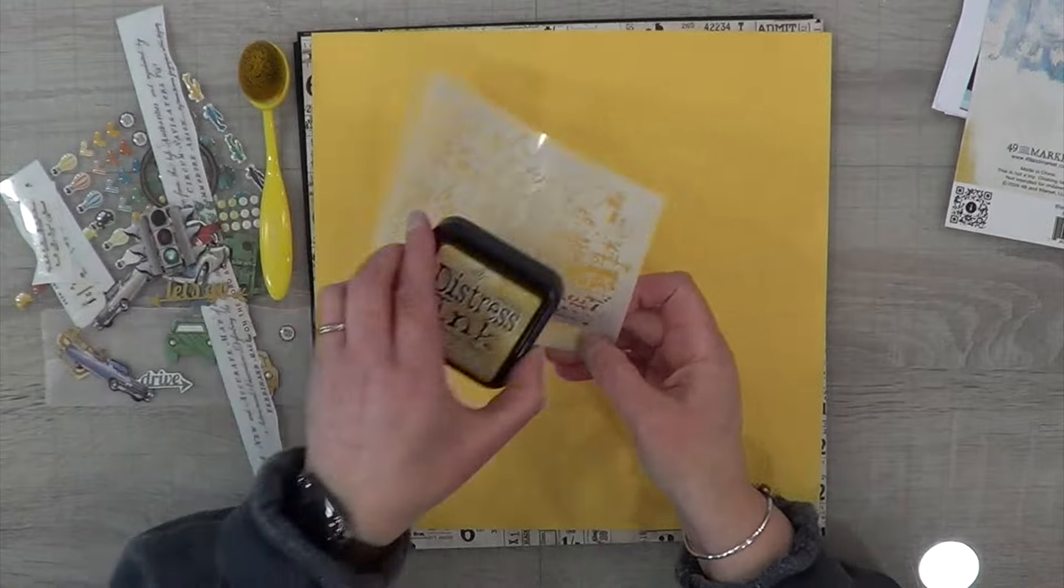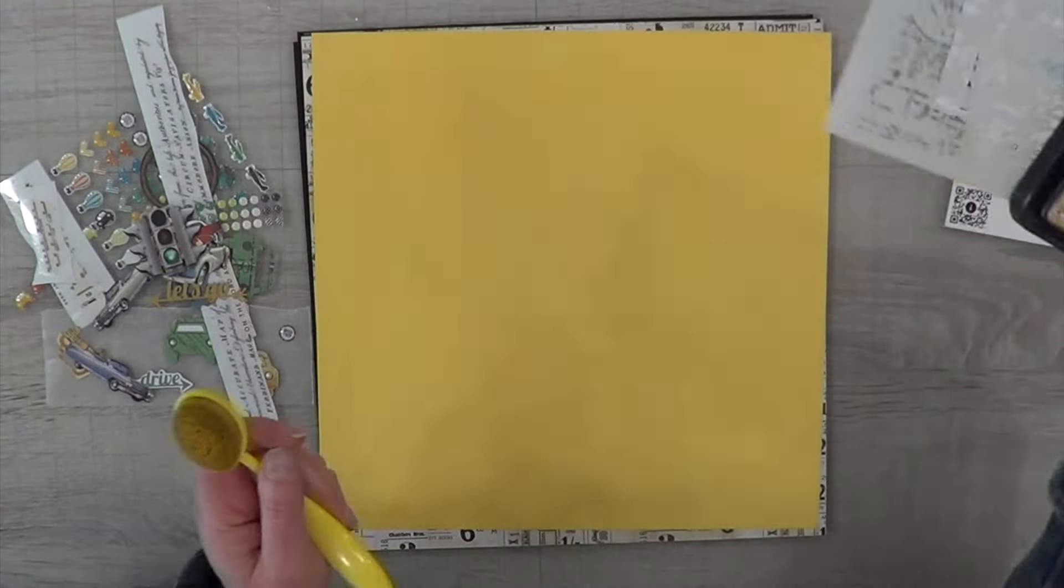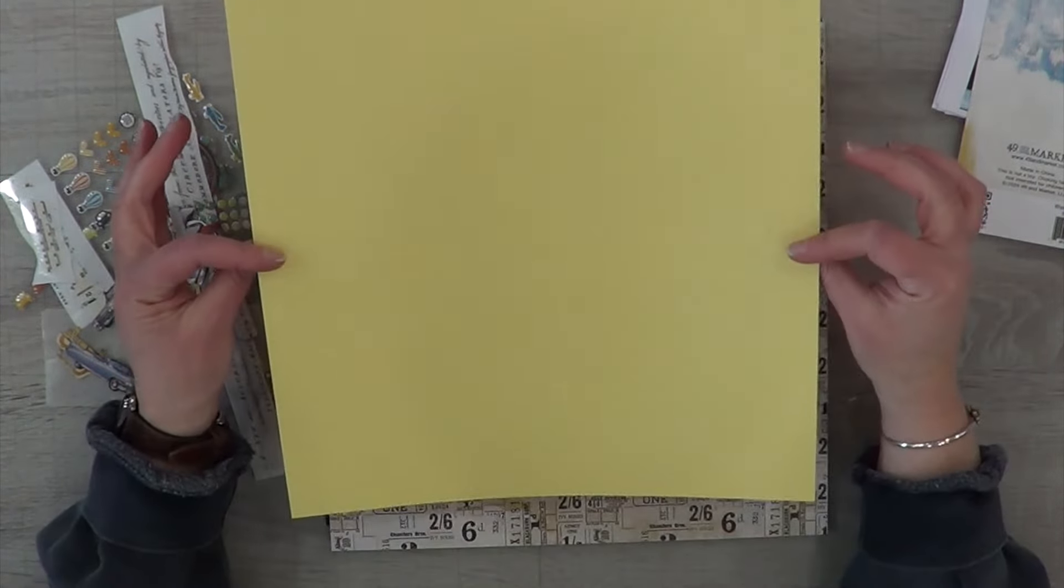I also pulled out some packaging as well as this stencil by 49 and Market - this is the postcard stencil - and I'm going to use Scattered Straw for this stencil because I forgot what other color I was going to use with this beautiful Canary cardstock by Close to My Heart.